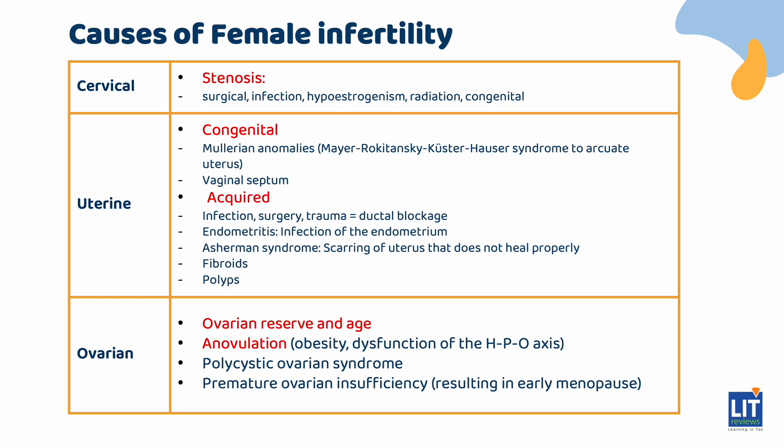Ovarian factor is the cause of most frustration and is often the hardest to treat. It is usually related to a woman's age, as women lose eggs over time, decreasing ovarian reserve. Tests to check ovarian reserve include FSH and AMH, but no single test is perfect. Other causes of ovarian factor include interruptions in the HPO (hypothalamus-pituitary-ovarian) axis, polycystic ovarian syndrome, and premature ovarian insufficiency resulting in early menopause.